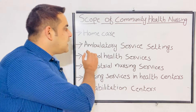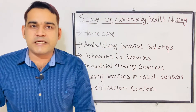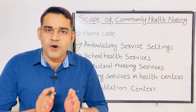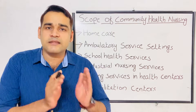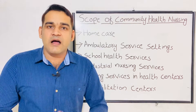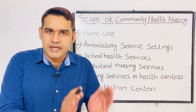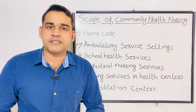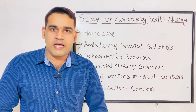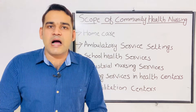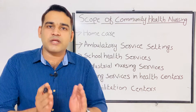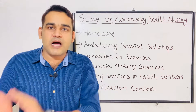The next scope is ambulatory service settings. What is meant by ambulatory? That means health services provided on an outpatient basis. We are not admitting the patients — we are just giving care and sending the patient back. Ambulatory services are provided in the community through clinics, child daycare centers, churches, or in the rural areas of the community.